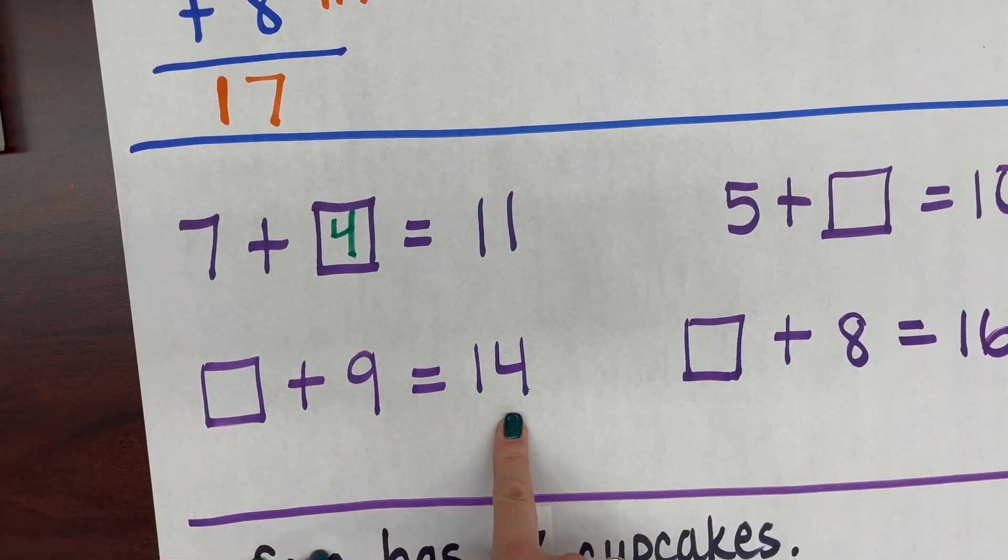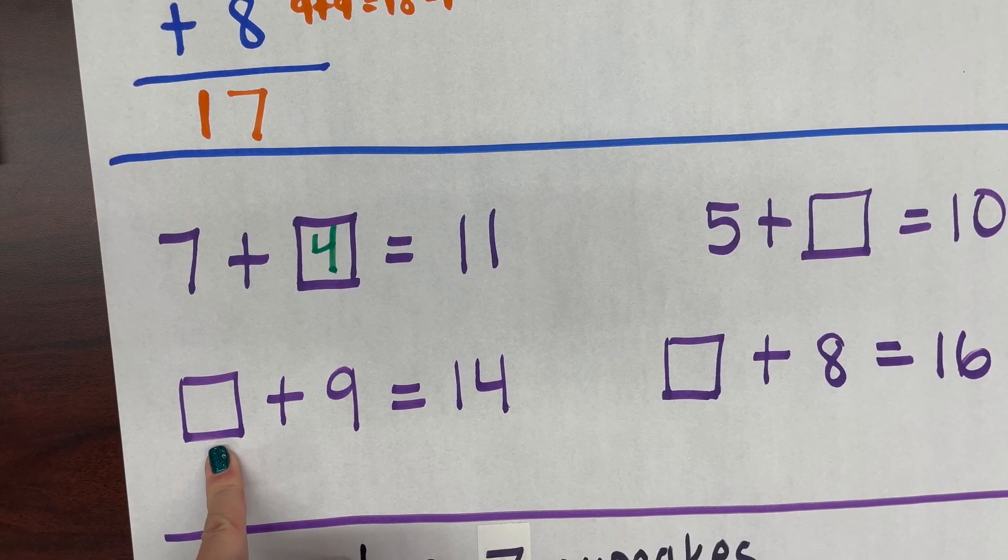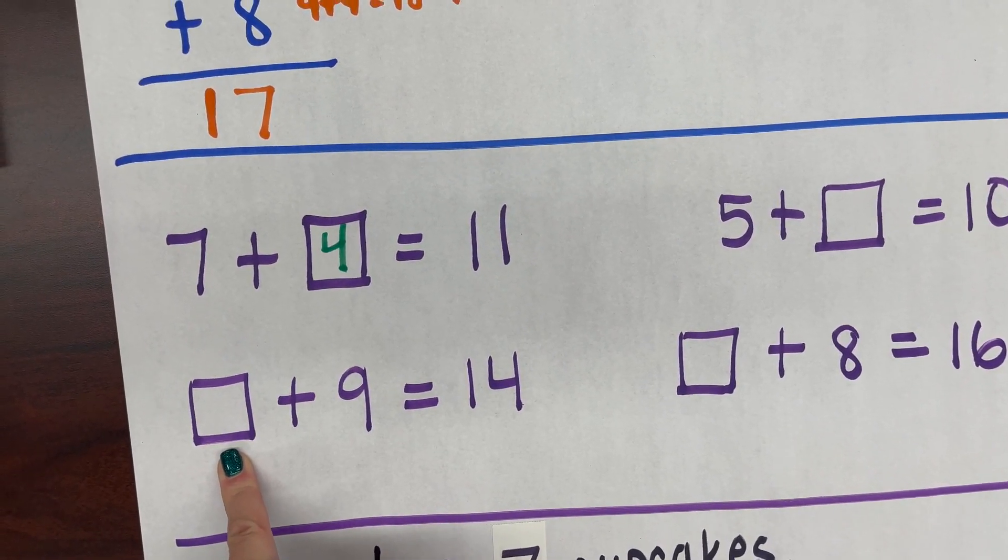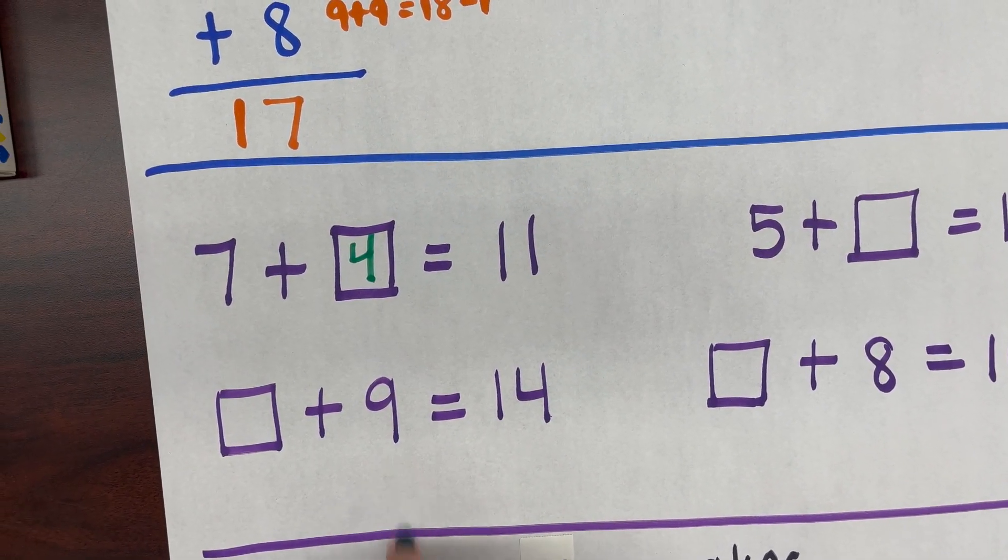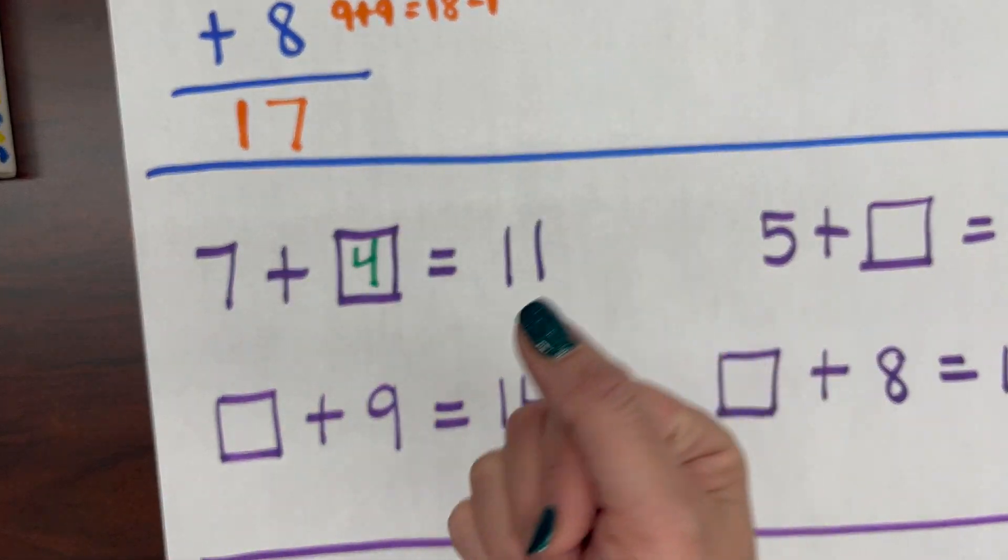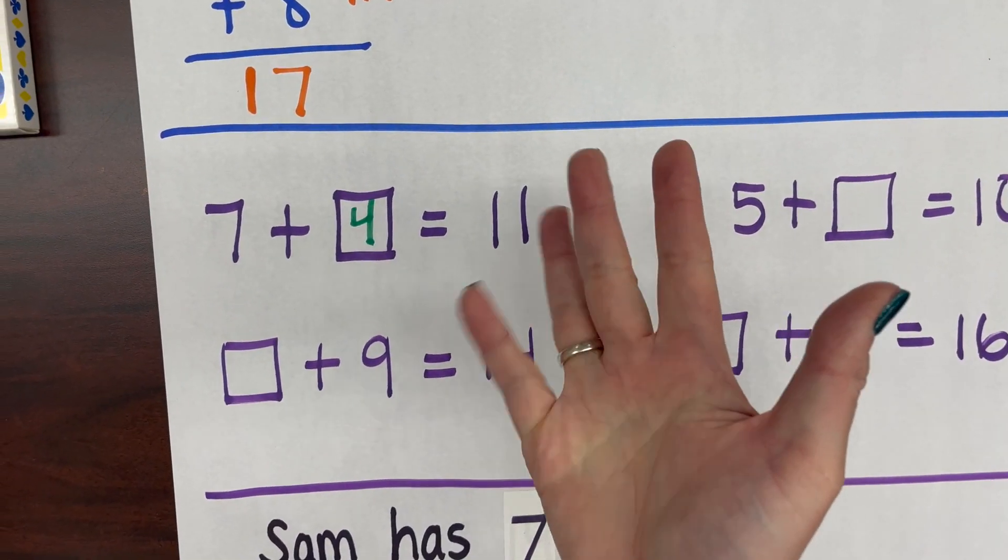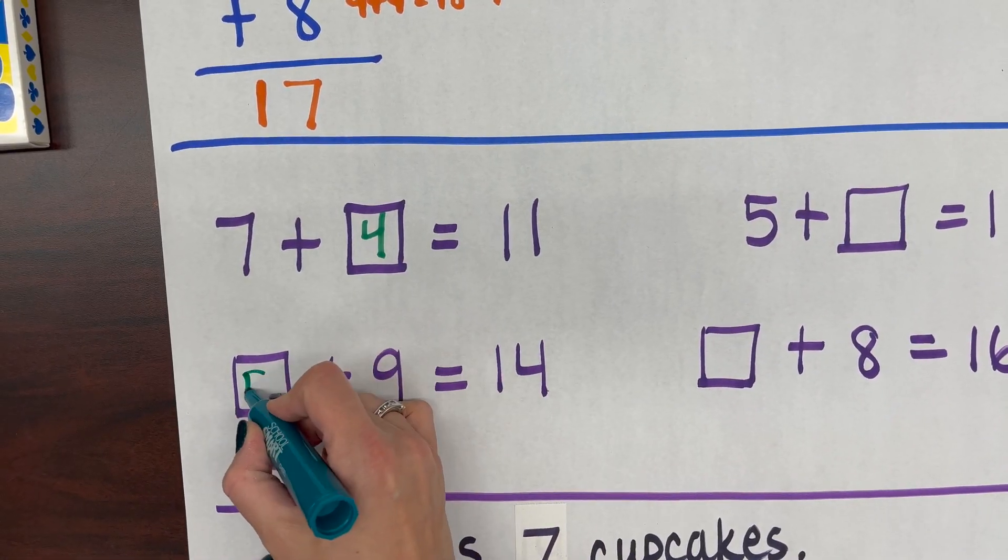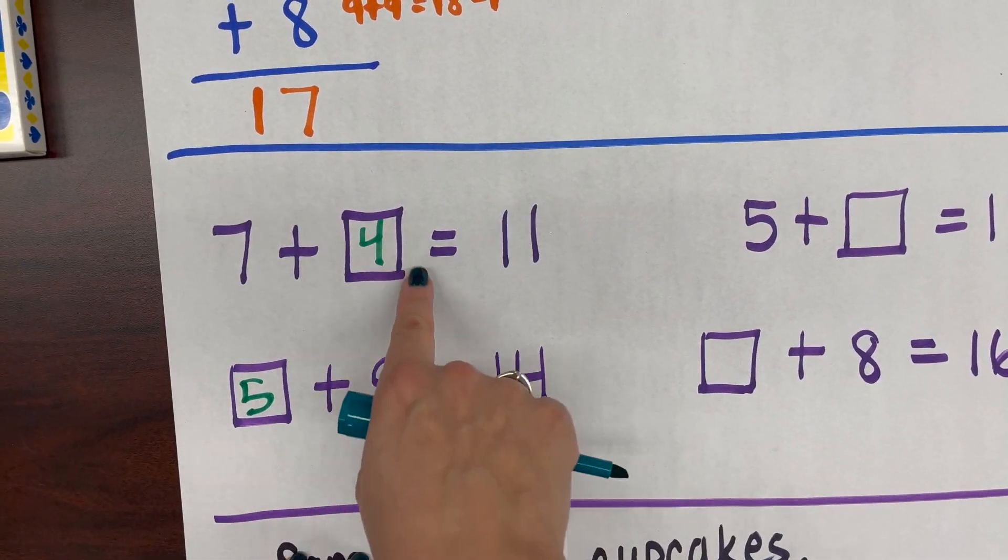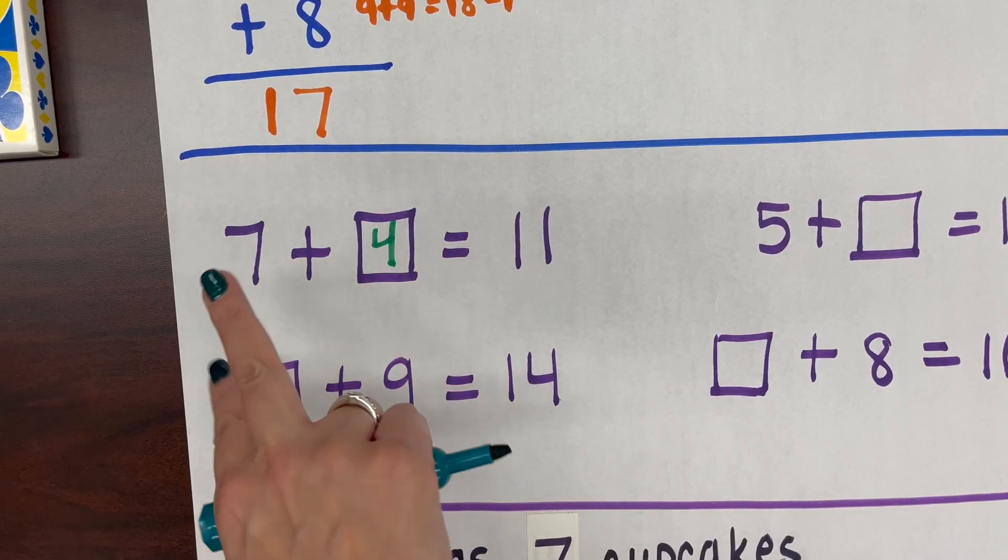Moving on to this example where the missing number comes at the beginning, I can also do the same thing. So I would grab 9 and count on until I got to 14. So 9, 10, 11, 12, 13, 14. My missing number would be 5 because addition is commutative where it could switch back and forth.